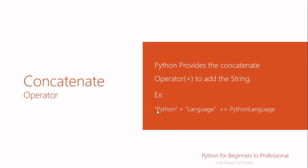For example, the first string is 'python' and the second string is 'language'. If we perform the concatenation operation, it will give the output 'pythonlanguage' without any space, because a space is also treated as a character. Since no space was included in either string, they are simply placed side by side.